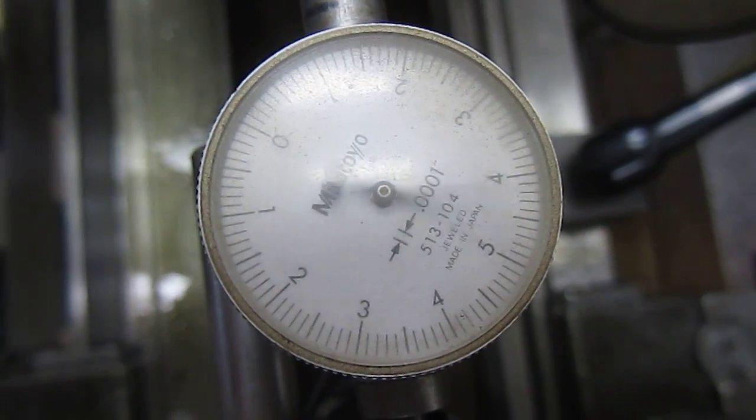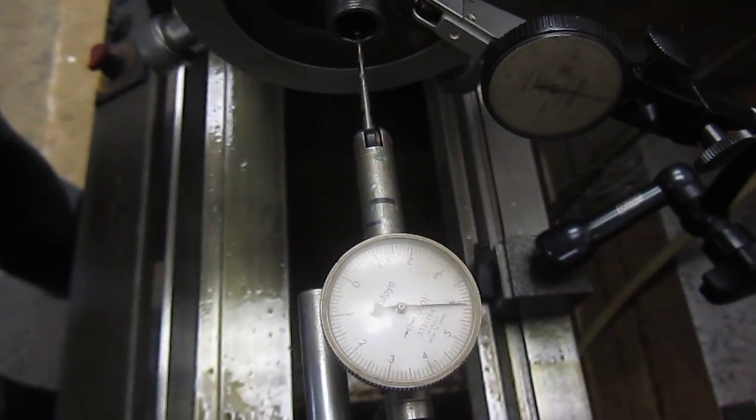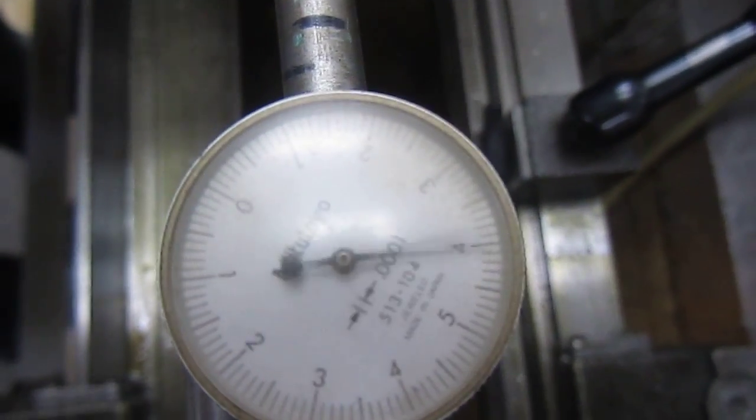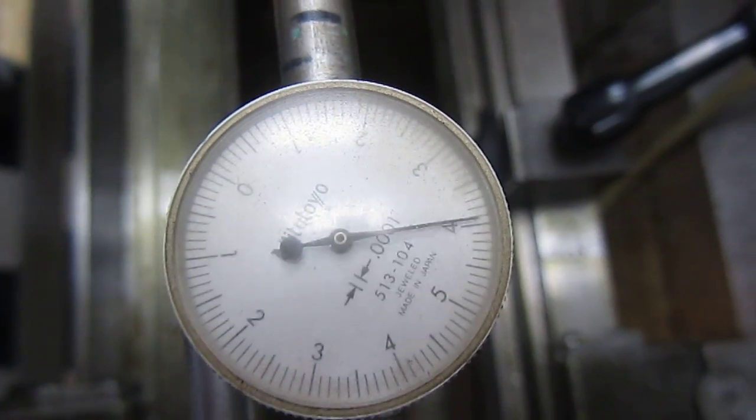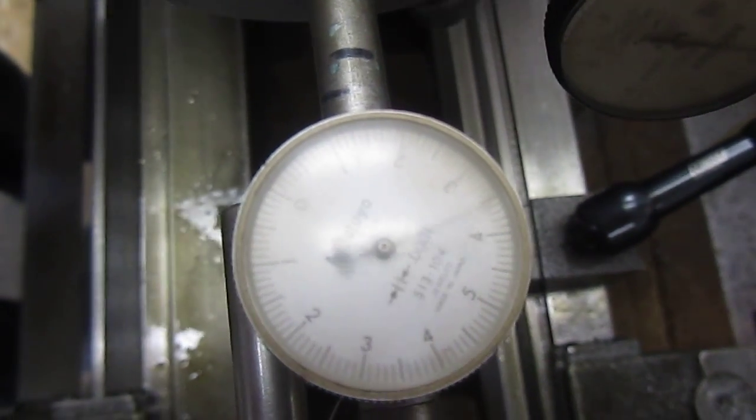As we move the indicator backwards out of the bore about an inch away from the first point, we're showing the indicator needle's not moving. So as I move it back in you'll notice that the indicator is not jumping and it's showing literally no runout.